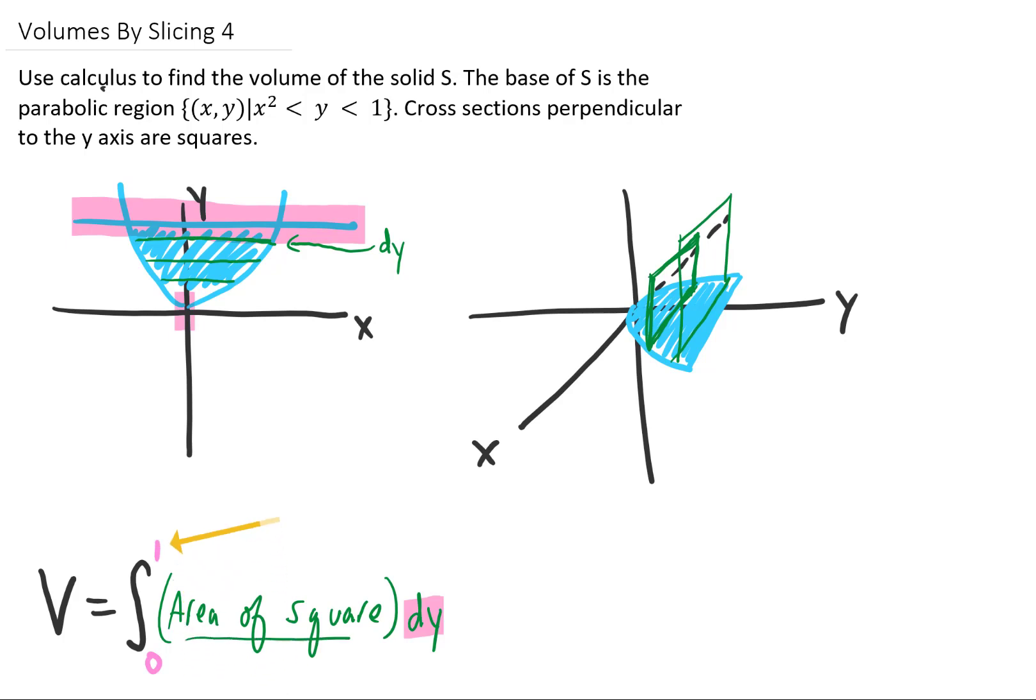Now as far as the area of the square goes, we know that the area of the square is the base squared. You'll notice that the base of each one of these squares is whatever this x value is on this parabola times 2.